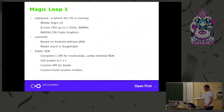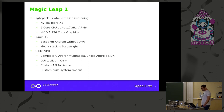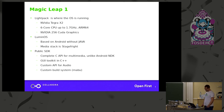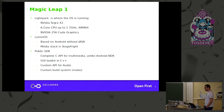The light pack is where the OS runs — it's an NVIDIA Tegra X2 chipset with six cores, ARM64. The OS is called Lumos, based on Android but with no Java. They probably did that to get vendor support from NVIDIA. The media stack is staged right from Android. There's a public SDK with a complete C API for everything, and a C++ API for UI toolkits and more advanced features.